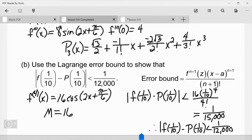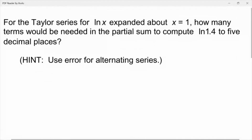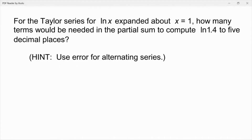There's one more problem here I want you to try. On this problem, we're going to use alternating series error, and it says we're going to use the Taylor series for natural log of x expanded about x equals 1. What I'm hoping you recognize is that's a series that we know. Using that series, how many terms would be needed in the partial sum to compute natural log of 1.4 to five decimal places? Use the known series — go back to that first page in these notes and write that series out. Pause the video, when you come back I'll show you the solution.